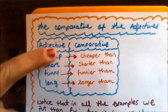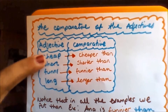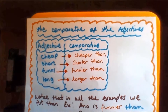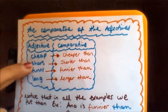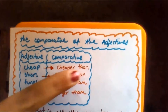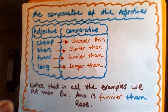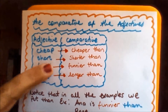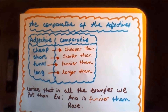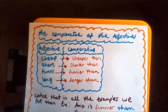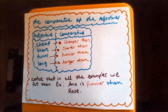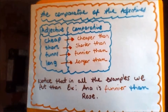En los adjectives, tenemos: cheap, barato; cheaper than, más barato que. Short, corto; shorter than, más corto que. Funny, gracioso; funnier than, más gracioso que. Long, largo; longer than, más largo que.